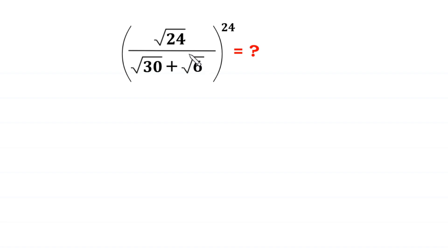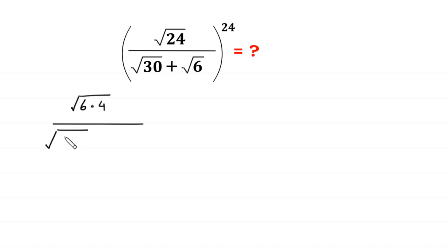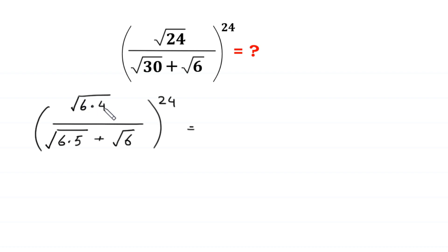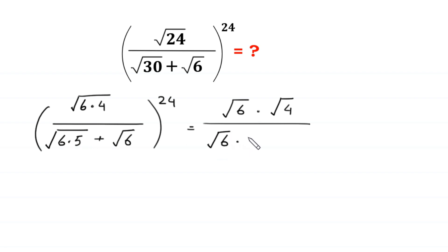Let's start by writing square root of 24 as square root of 6 times 4, divided by square root of 30 written as square root of 6 times 5, plus square root of 6, whole to the power 24. Next, we can write square root of 6 times 4 as square root of 6 times square root of 4, divided by square root of 6 times 5 as square root of 6 times square root of 5, plus square root of 6, whole to the power 24.